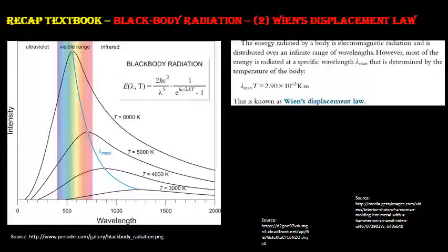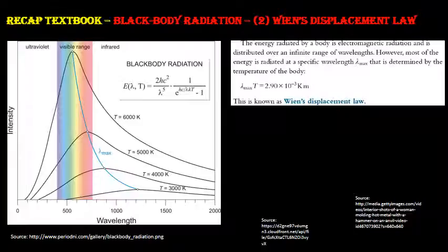The second part of blackbody radiation concerns Wien's Displacement Law, which relates peak wavelength to temperature. We know from IGCSE that every object above absolute zero emits infrared. However, this is not completely correct — at higher temperatures objects actually emit visible light as their peak emission, not just infrared.